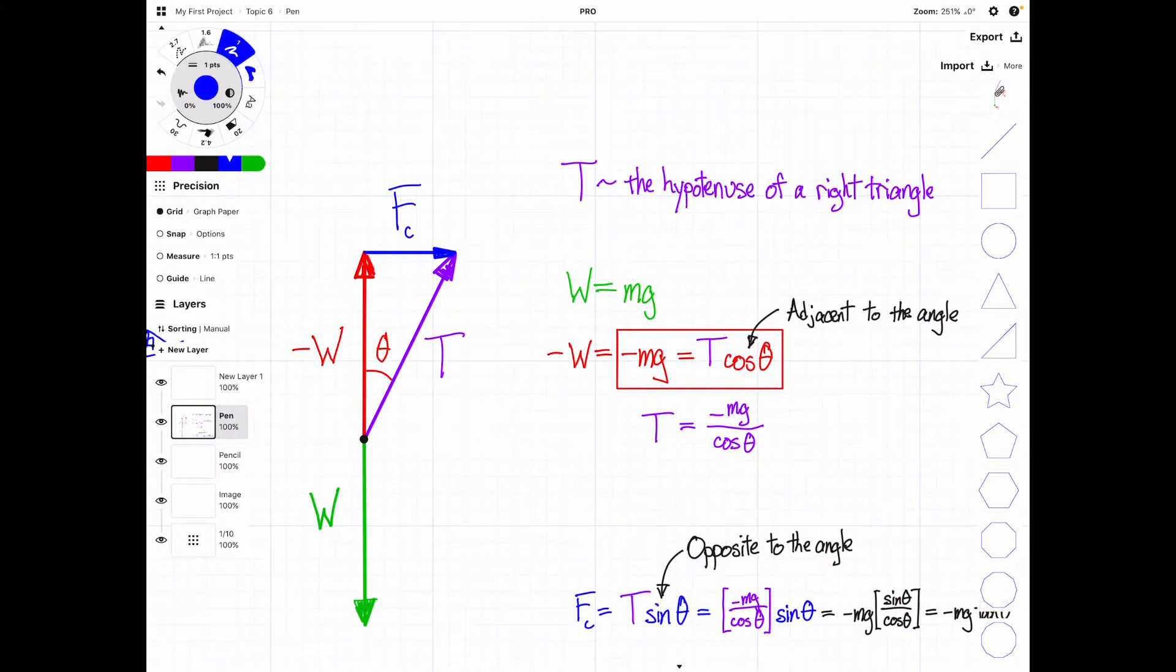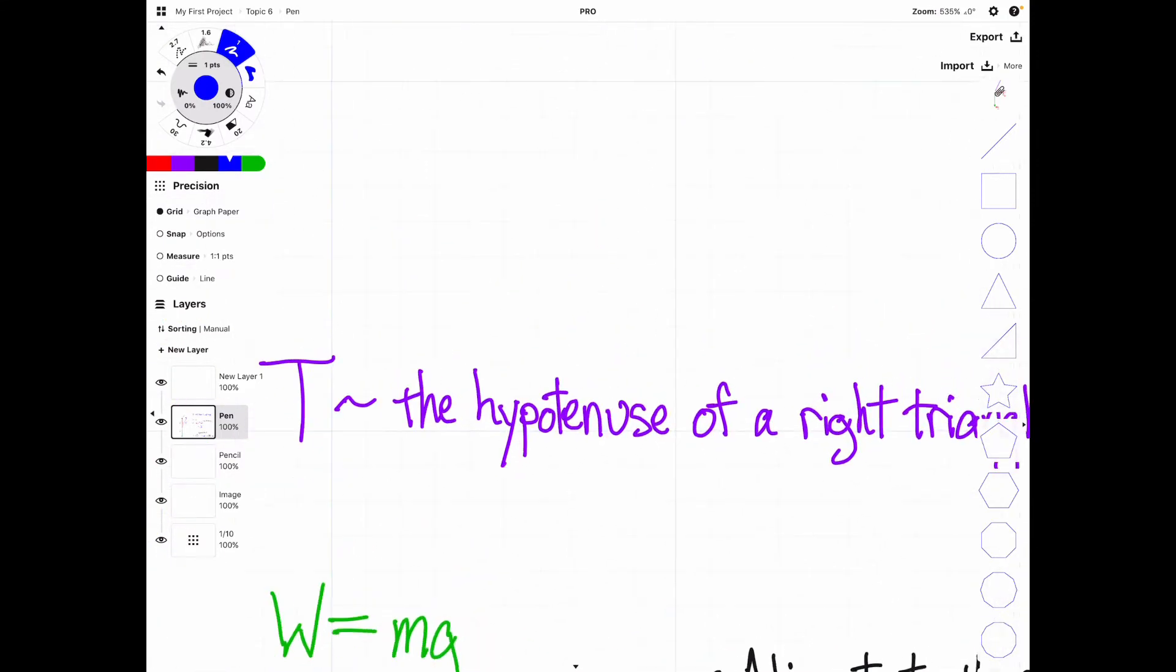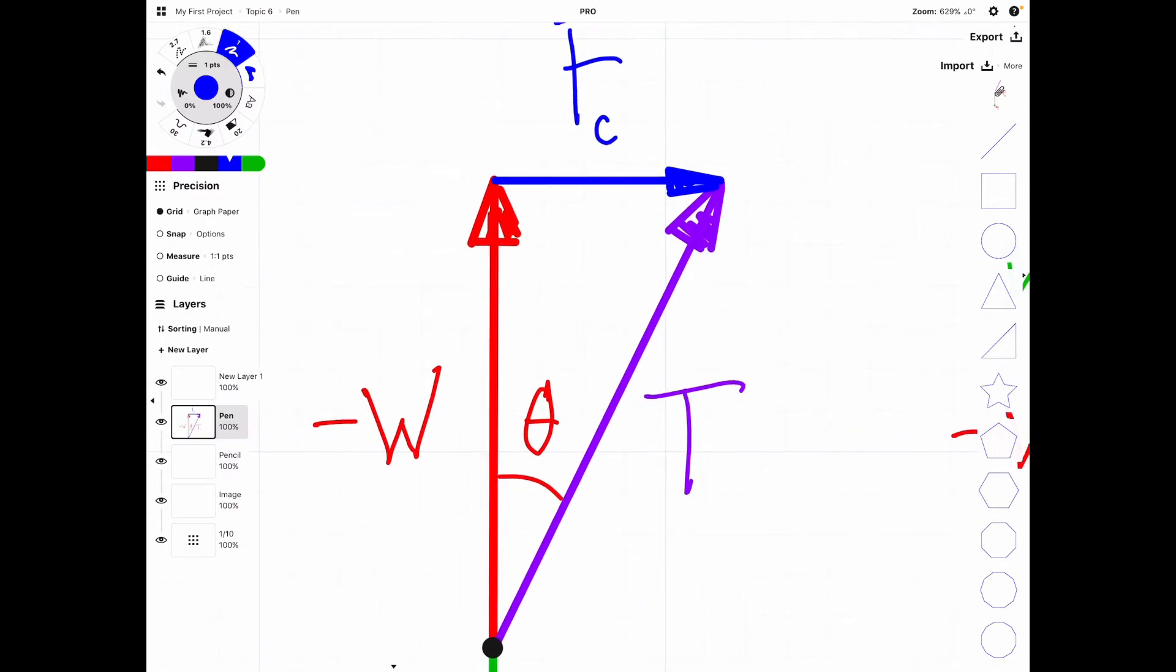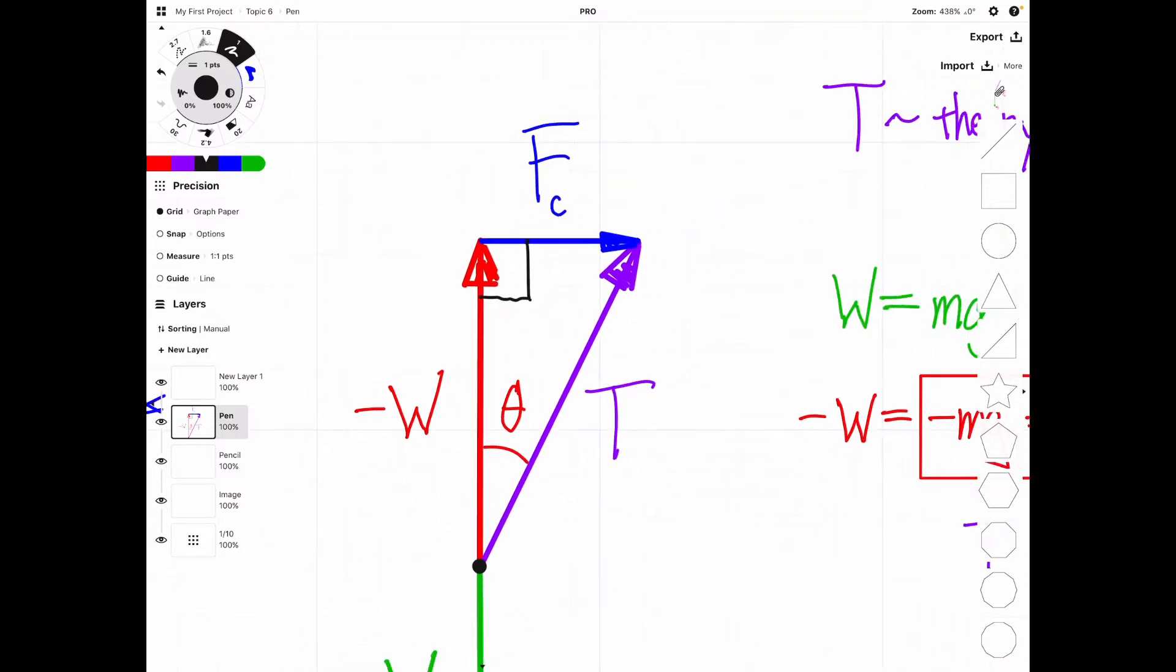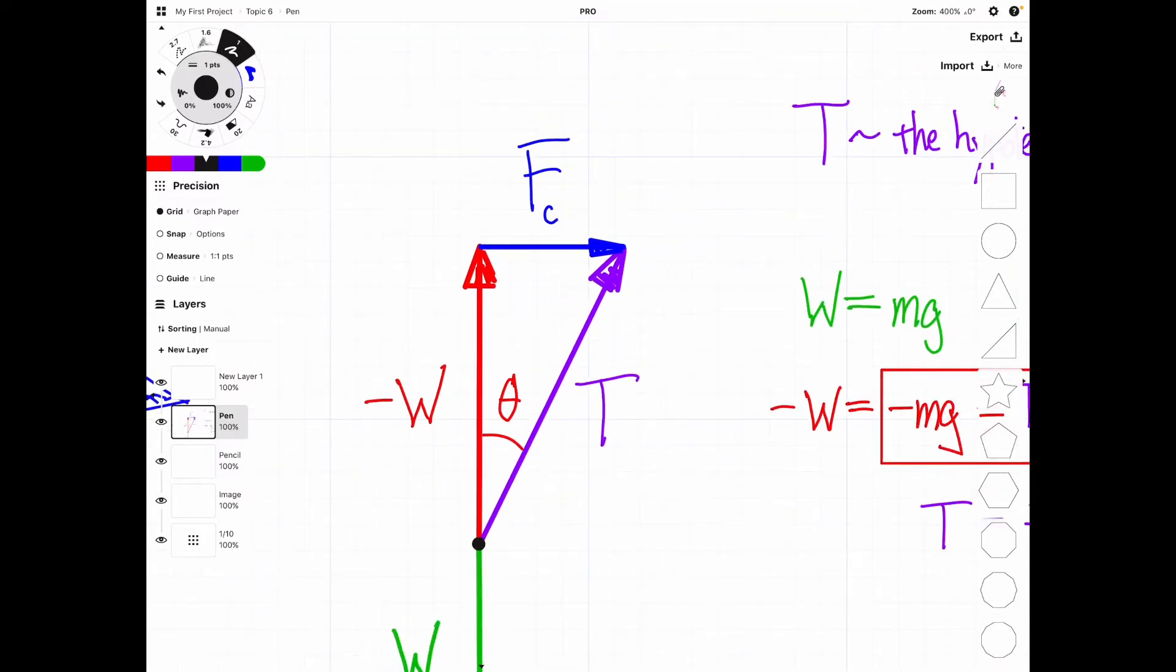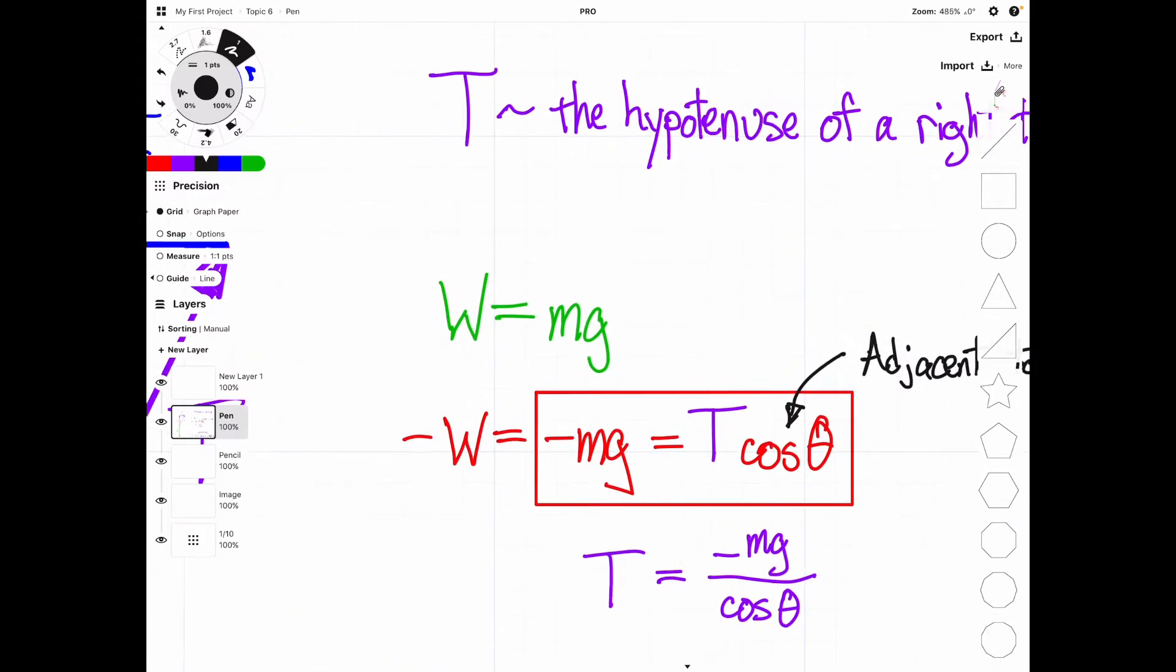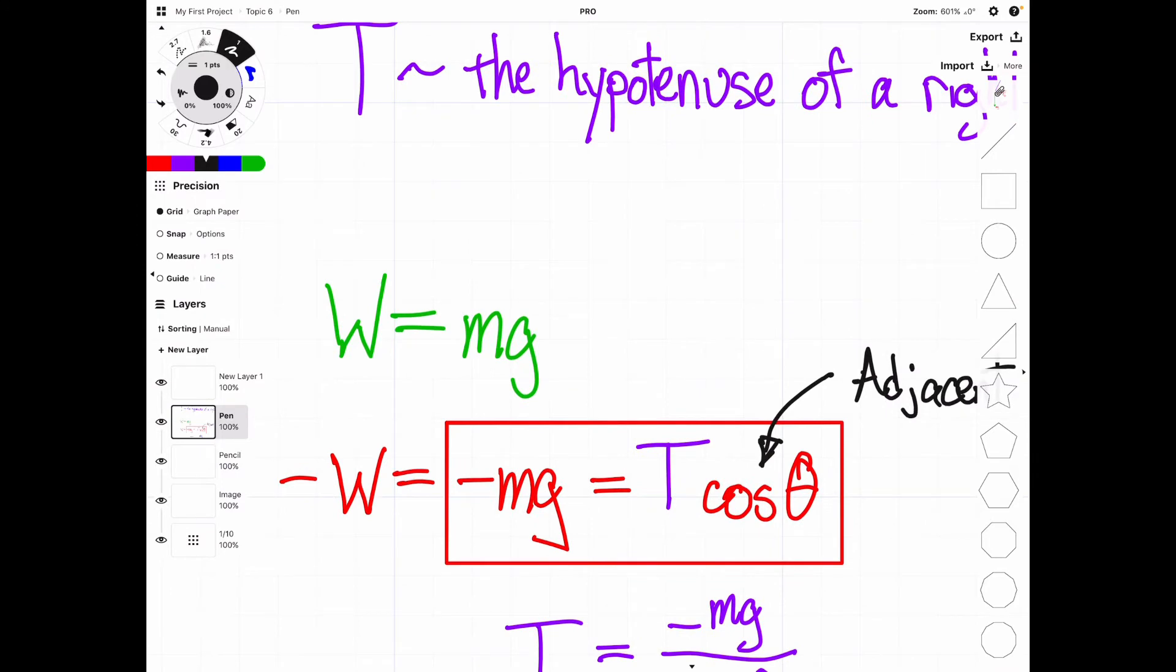We should note here that T, tension, is the hypotenuse of a right triangle. So I could add a little box to indicate a right triangle, and that would be fine. It makes perfect sense. So we also know that weight is equal to mass times gravitational acceleration.